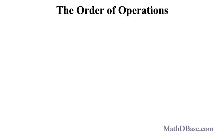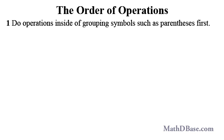There are 5 basic rules that mathematicians around the world have agreed to follow in evaluating expressions. Rule 1: Do operations inside of grouping symbols such as parentheses first. Given this expression, we add the 3 and 5 first to get 8, and then we multiply by 2 to get 16.